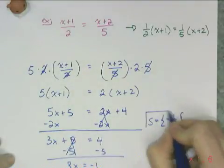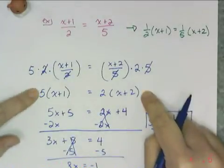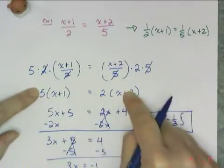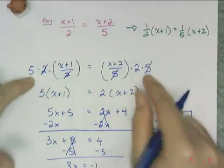Now those of you who learned how to cross multiply might recognize this step here because when you cross multiply, this is the result. Cross multiplication actually is just using the multiplication property of equality twice.